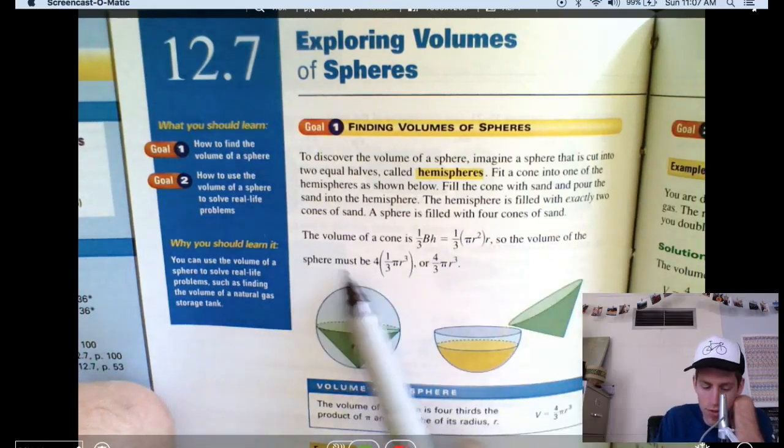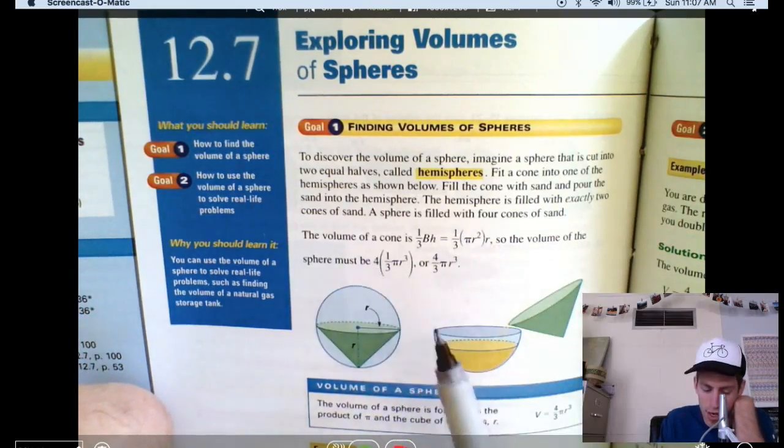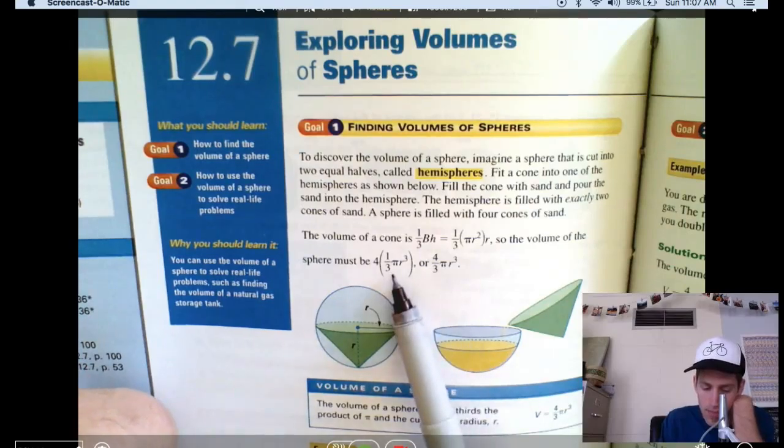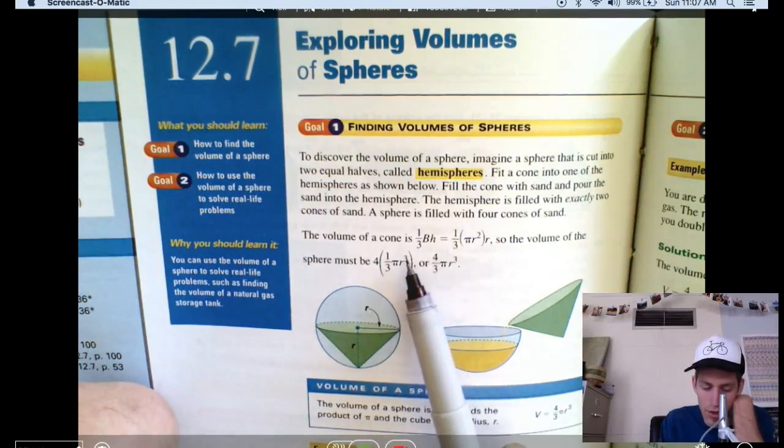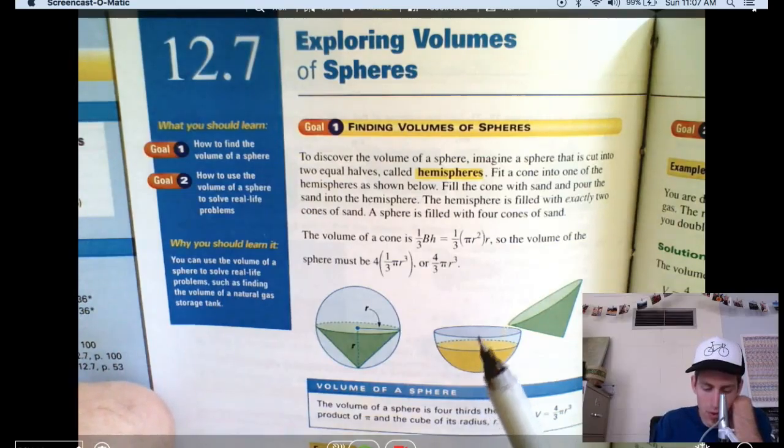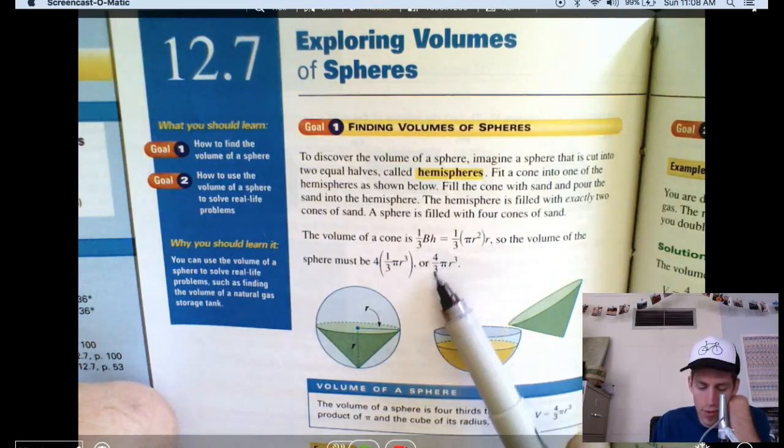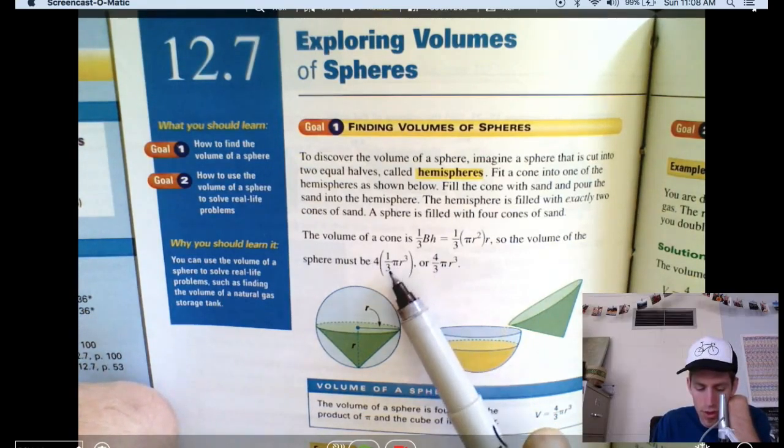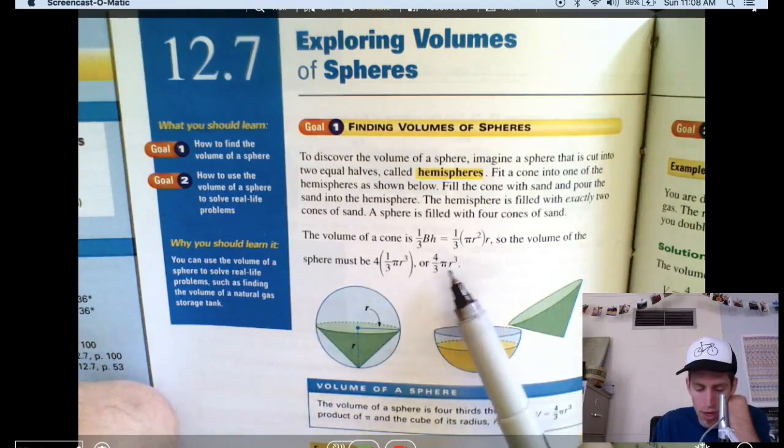So the volume of the sphere must be four times, so four cones, one-third pi r cubed. Or you can also write it like this, four-thirds, because four times one-third is four-thirds pi r cubed.